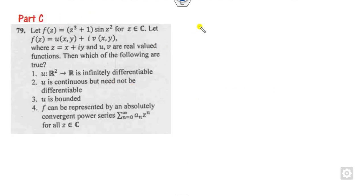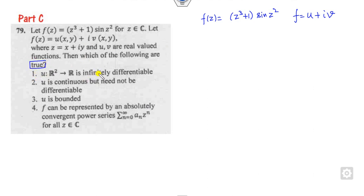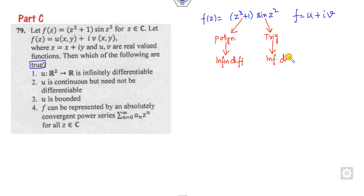Now Part C — more than one correct option. F can be written as U + iV. First option: is U infinitely differentiable? The function f(z) is a product of a polynomial and a trigonometric function. Every polynomial is infinitely differentiable, and every trigonometric function is infinitely differentiable. Also, f is analytic since it is a product of a polynomial and a trigonometric function.